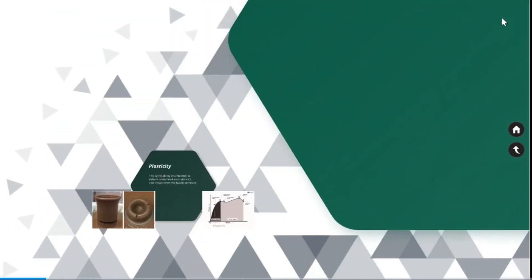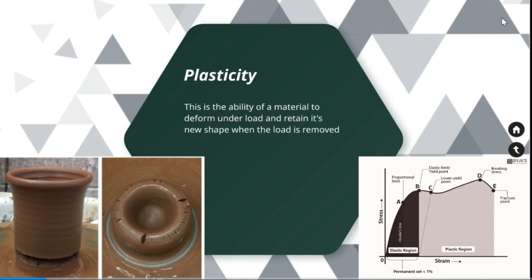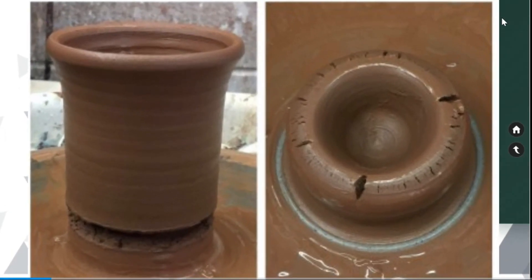Plasticity. This is the ability of a material to deform under a load and retain its new shape when the load is removed. That means, the material is not going to return to its original shape. The clay undergone plastic deformation and attained its new shape.